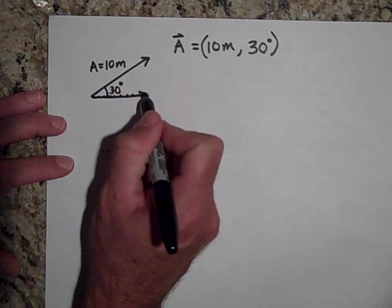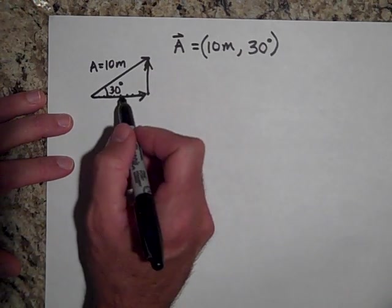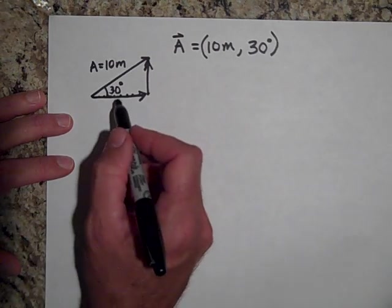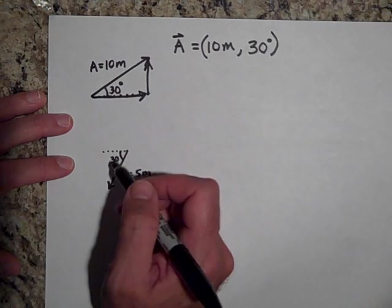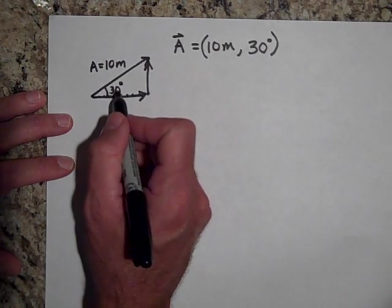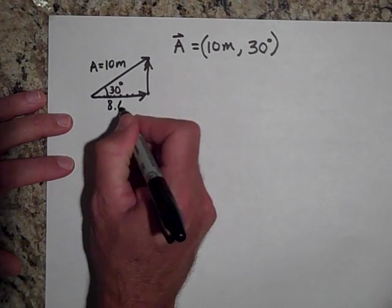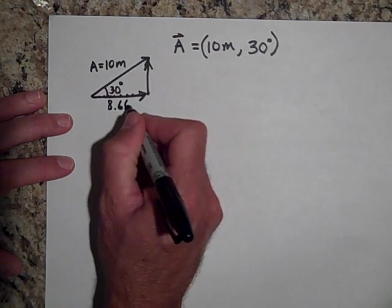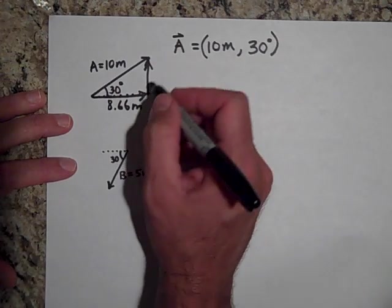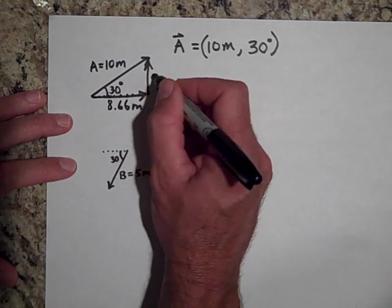Or we could use unit vectors. The way you use unit vectors is you break this into an x and a y component. The two components add vectorially to give you 10 meters — not in a scalar way, but vectorially. The cosine of 30 degrees times 10 meters gives about 8.6 meters, and the sine of 30 degrees times 10 meters gives 5 meters.